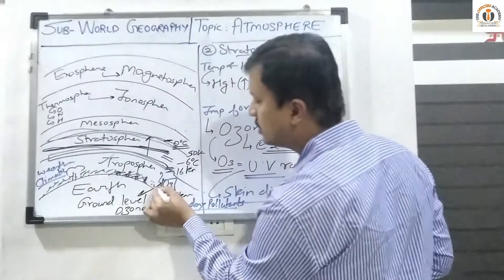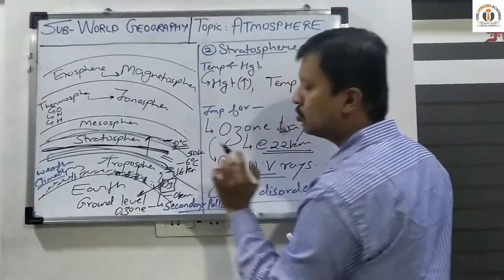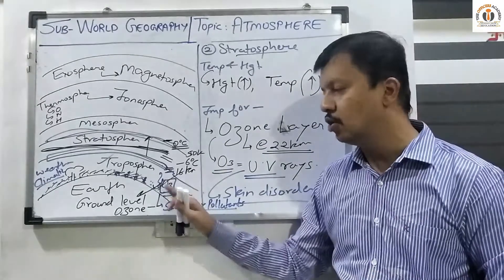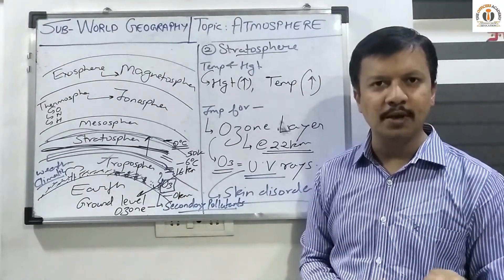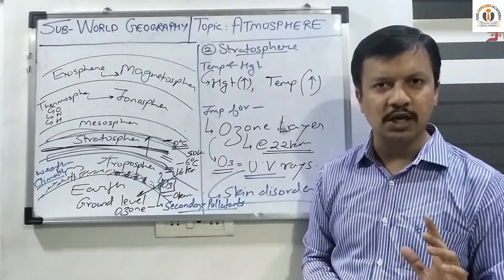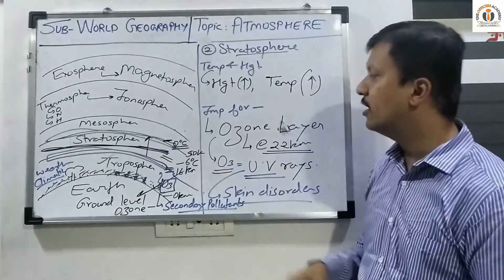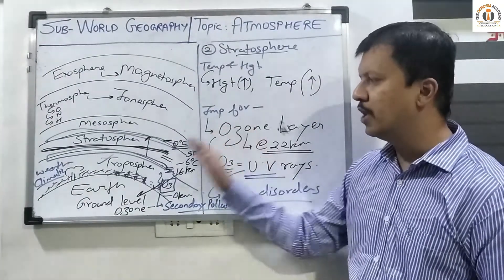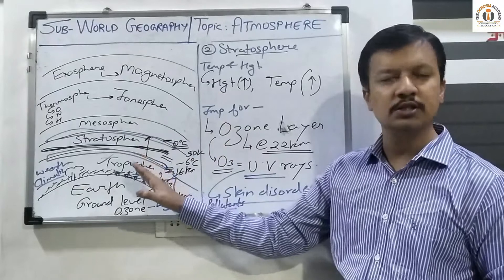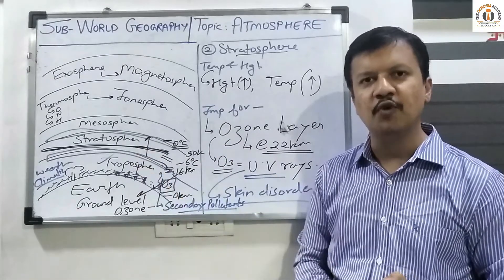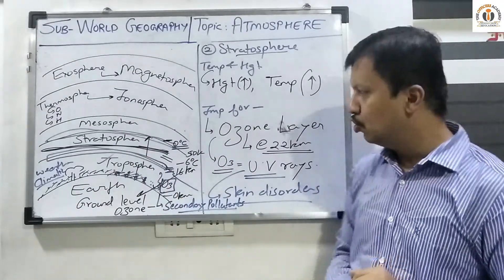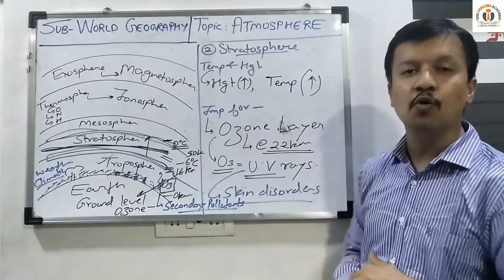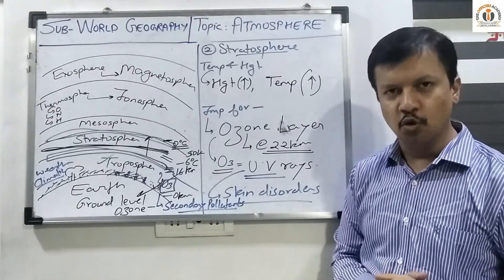This photochemical reaction causes the formation of ground level ozone. Ozone present in the troposphere is harmful for human beings because it causes respiratory disorders. We have understood the importance of the ozone layer in the stratosphere and how the same ozone in the troposphere can be harmful for human beings.